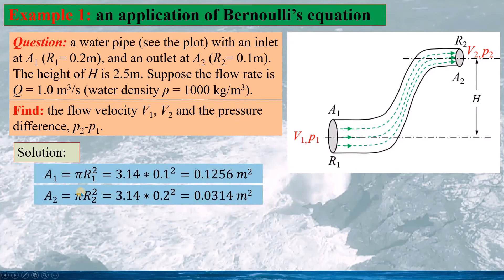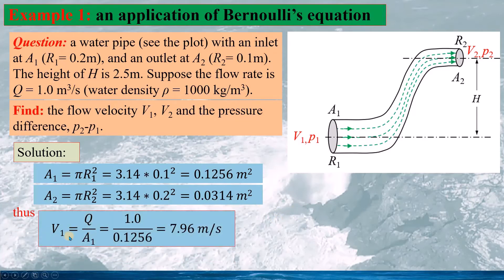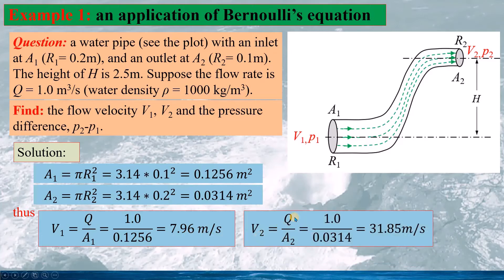For the solution, we calculate the cross-sectional areas A1 and A2. Assuming uniform velocity at A1 and A2, we apply V1 equals Q divided by A1 and V2 equals Q divided by A2, giving V2 equal to 31.85 meters per second.